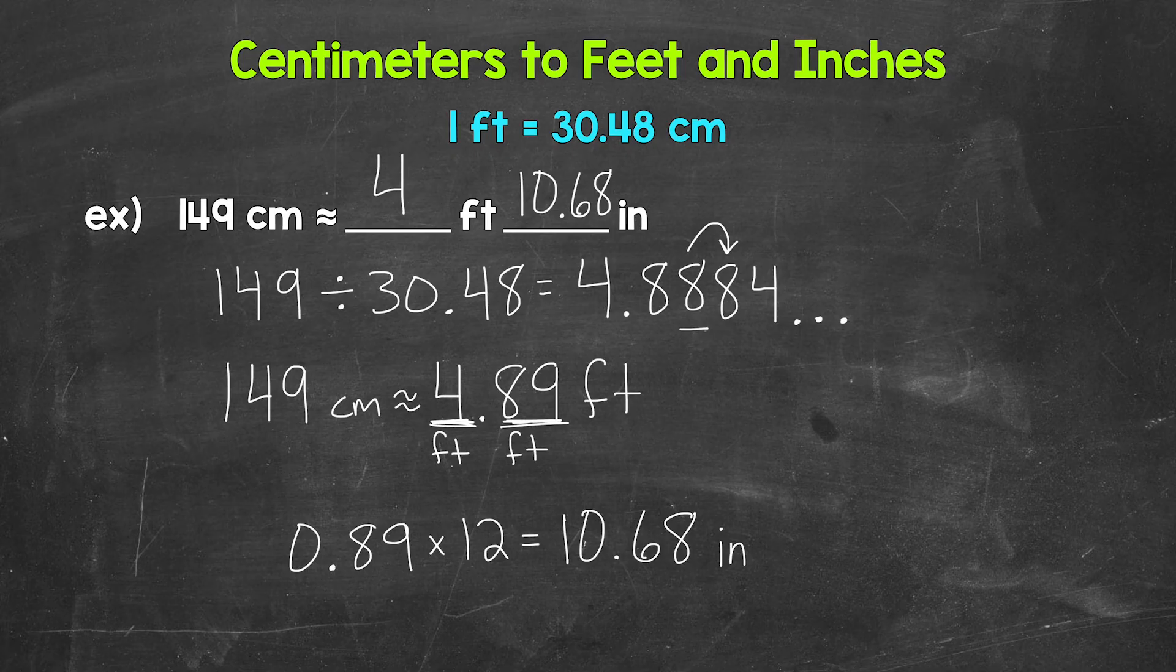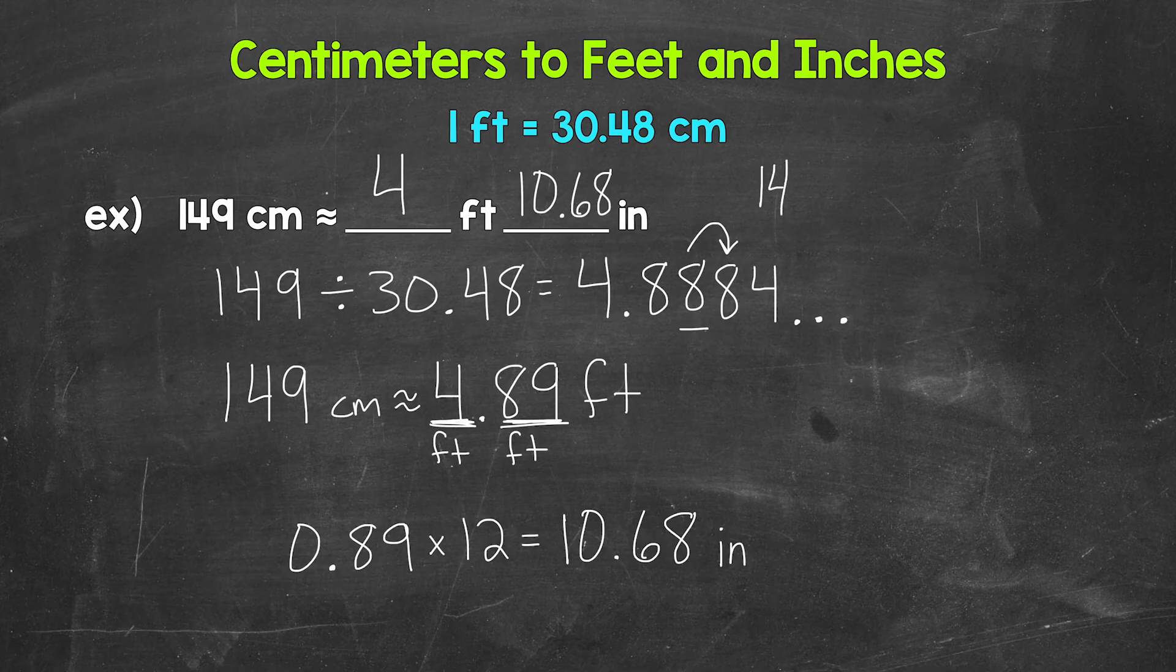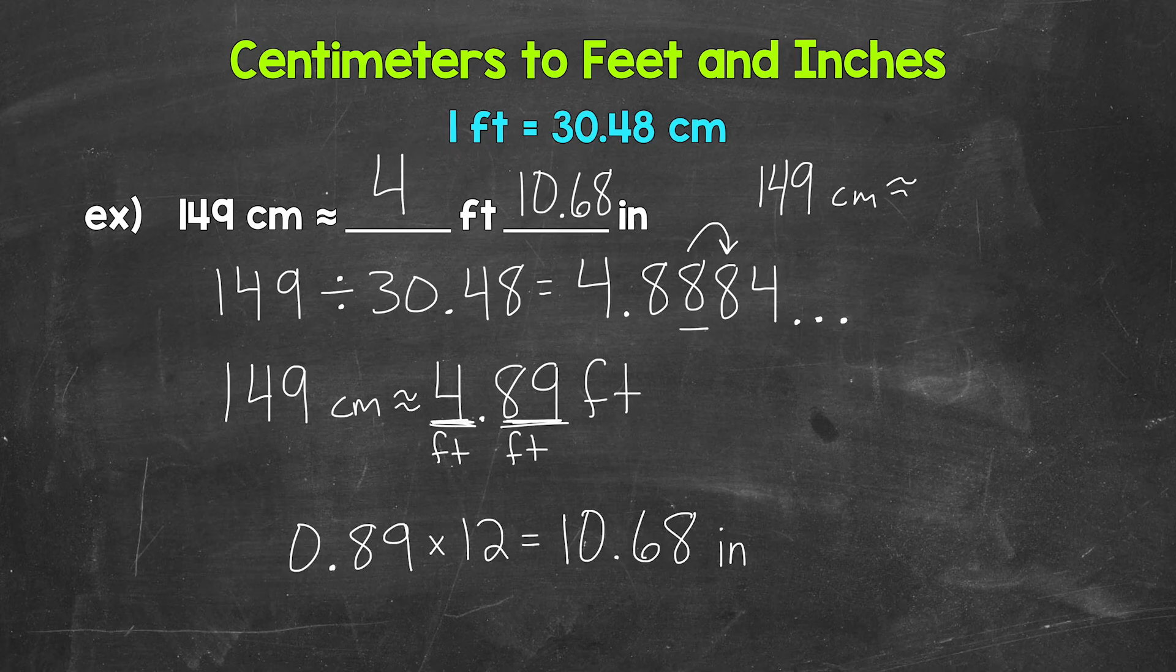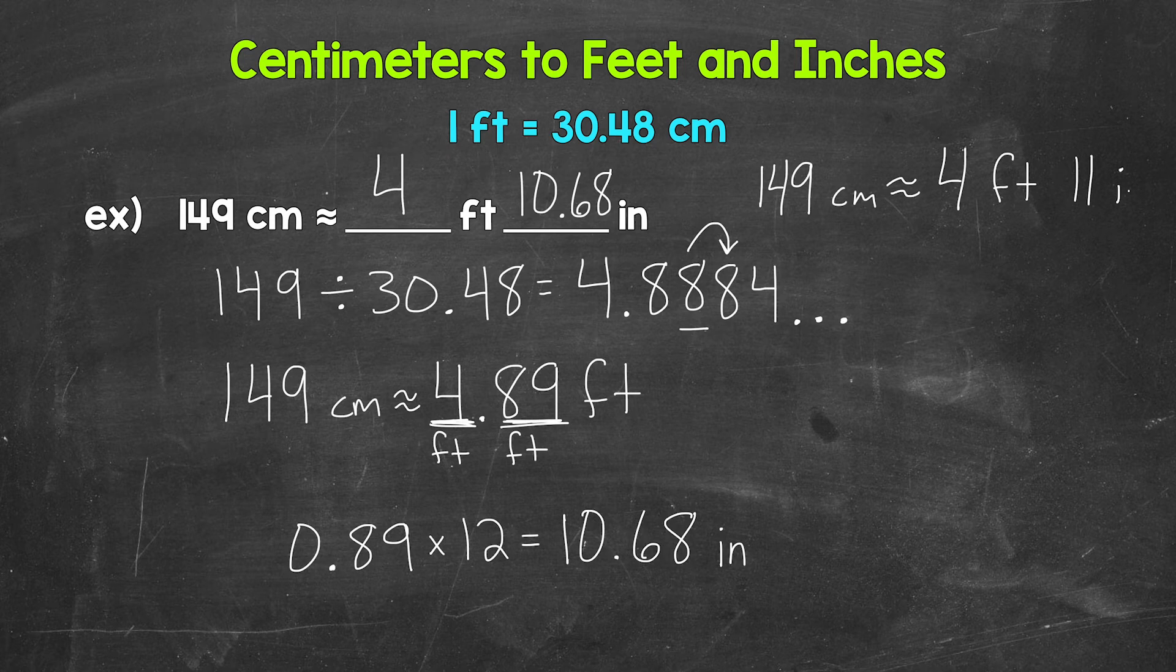For example, 10.68 rounds up to 11. So 149 centimeters is approximately 4 feet, 11 inches.